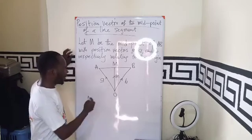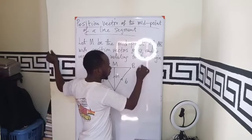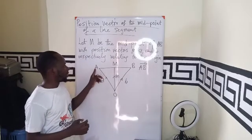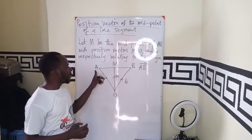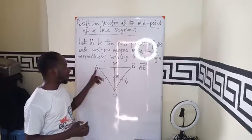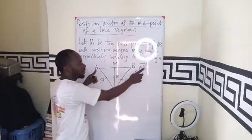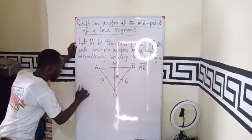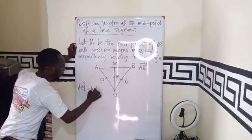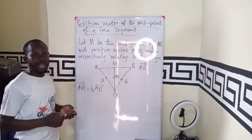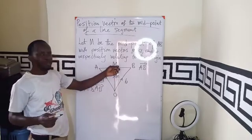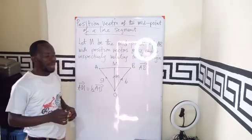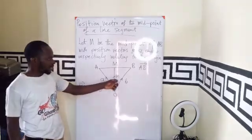Now, so if we take the vector AB, vector AB, which is the longest distance, in between AB we have M. So I can find vector AM as half of this. So I can say that vector AM from A to M is half of AB. Similarly, from M to B is also half of AB.